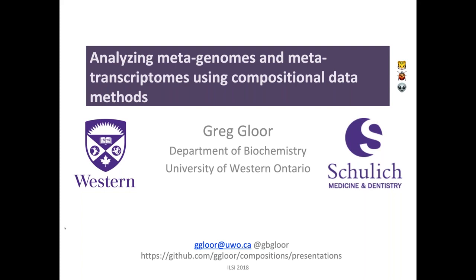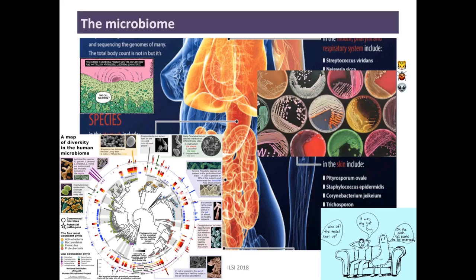I'm going to be talking about methods that are generalizable to any sequencing-based omics approach. I'm sure everybody knows about the microbiome, but just to reorient: we're trying to understand how the microbiome interacts with the host. We are really a meta-organism — we have about the same number of microbial cells as human cells, and there's a lot more gene functionality in the human microbiome, especially in the gut, than in our own genomic information. So the microbiome is hugely important.